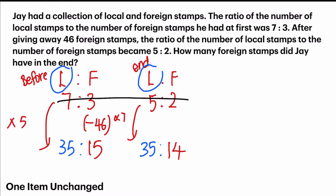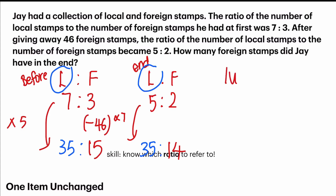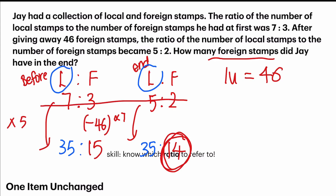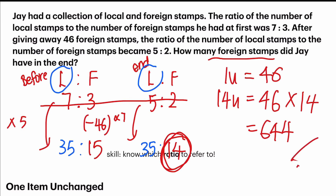The next important skill is to know which ratio to refer to. Looking at the foreign stamps: 15 units before and 14 units after means a change of 1 unit, which refers to 46 stamps. The final question asks how many foreign stamps Jay had in the end, which is 14 units. I refer to the new ratio, not the old one. So finding 14 units: 46 divided by 1 gives 1 unit, then 46 times 14 gives me 644. That's my final answer.